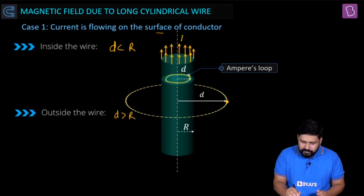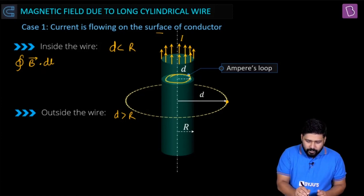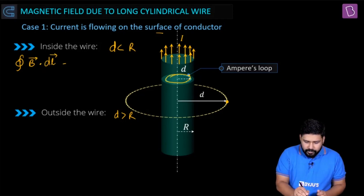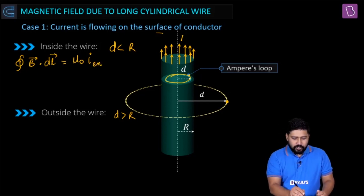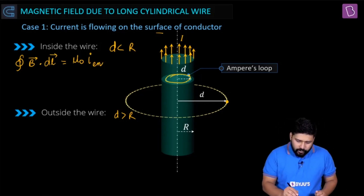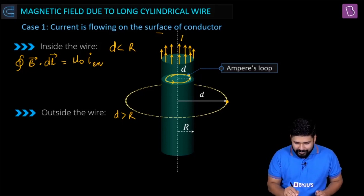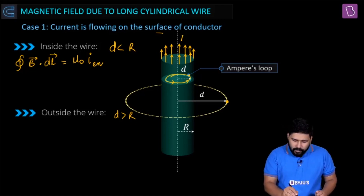We have drawn our Amperian loop, which is a circle. We write the integral of B vector dot dl vector, which equals mu naught times I enclosed — the current threading in or out of the circuit. I'm going to take the anticlockwise direction, which means the current coming out will be positive.